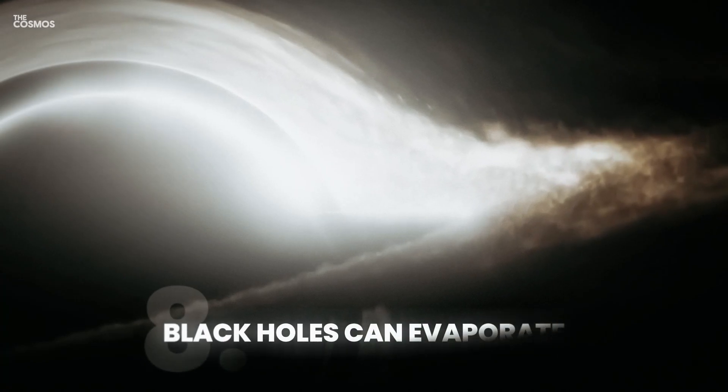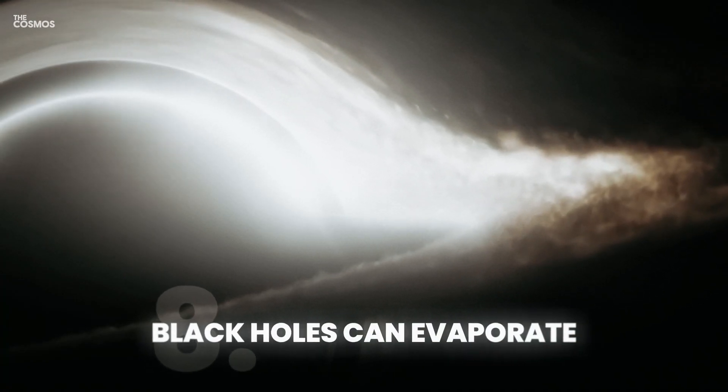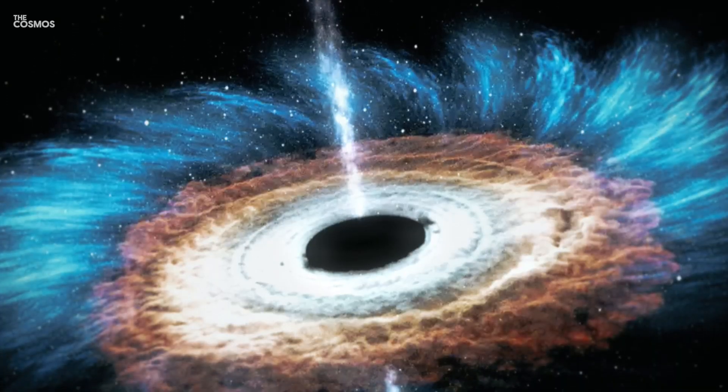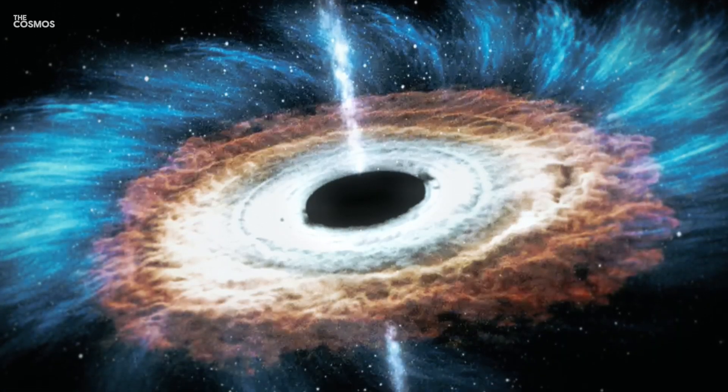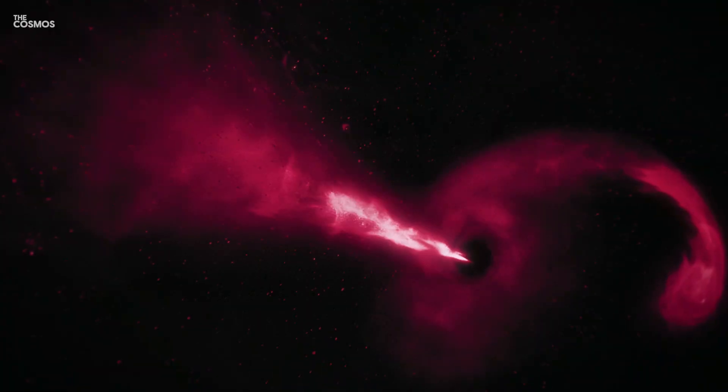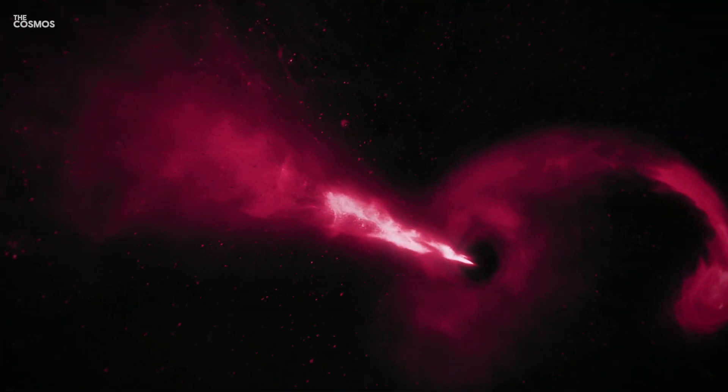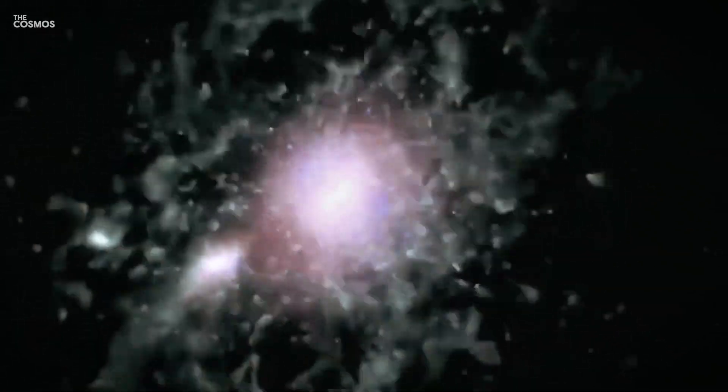Black holes can evaporate. According to Stephen Hawking's groundbreaking theory, black holes are not entirely black but emit a faint radiation known as Hawking radiation. Over time, this radiation causes the black hole to lose mass and energy, leading to its gradual evaporation.